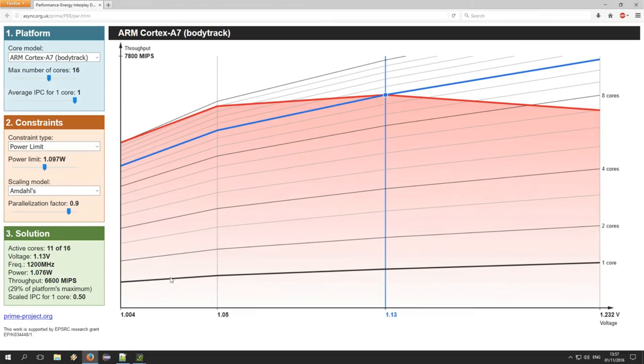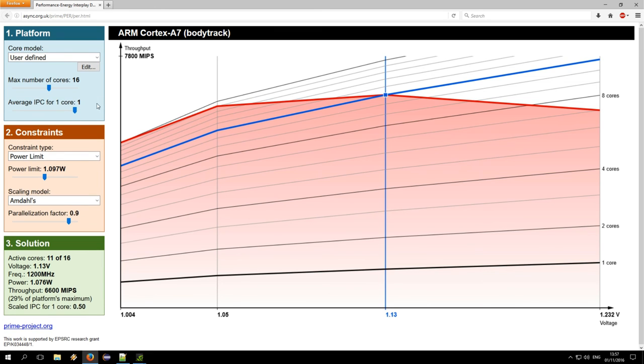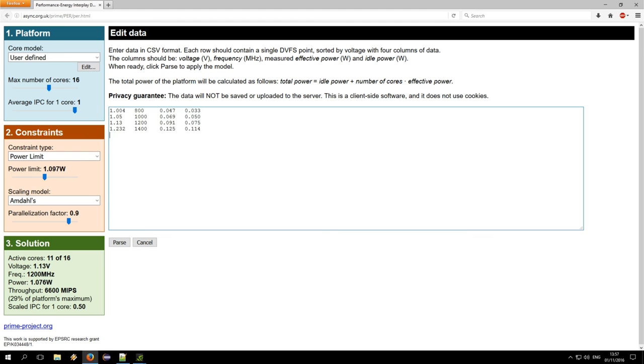Our team in Newcastle have developed a tool for exploring performance, energy, and reliability tradeoffs with regard to all these effects. The tool includes a variety of experimentally collected power and performance data from devices like ARM and Intel processors, as well as Xilinx FPGA. It is also possible to upload your own data in CSV format.